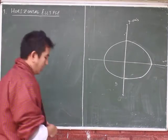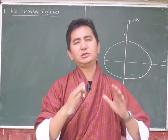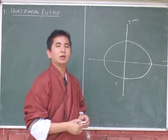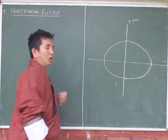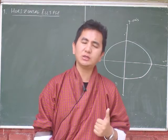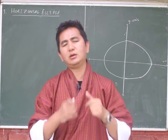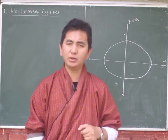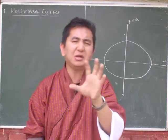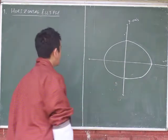Good morning students. We are going to the next chapter called ellipse. Ellipse is divided into two parts: one is called a horizontal ellipse and another is called a vertical ellipse. I will be doing only the horizontal ellipse — please listen carefully. For the vertical ellipse, please do it yourself and send me a picture via messenger. Note that ellipse and hyperbola are almost the same; there is only a little difference with the eccentricity.